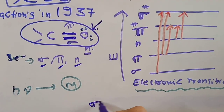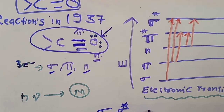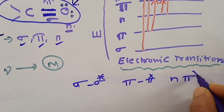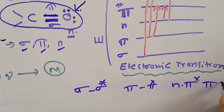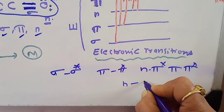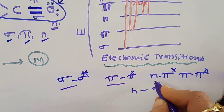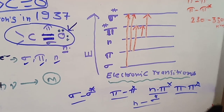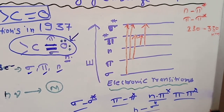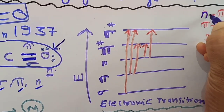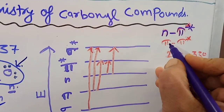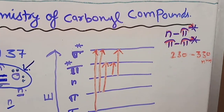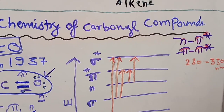The possible transitions are: sigma to sigma*, pi to sigma*, n to pi*, pi to pi*, and n to sigma*. The energy requirement for every transition is different. Carbonyl compounds mostly undergo two types of transitions: n to pi* and pi to pi*. When they absorb radiations of 230 to 330 nanometers, these transitions take place.